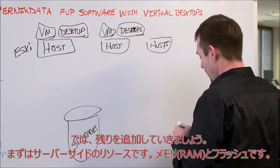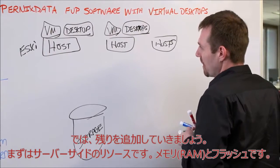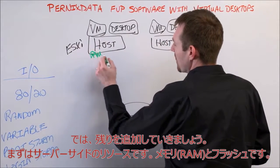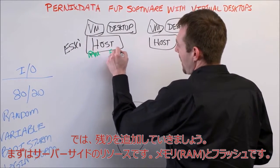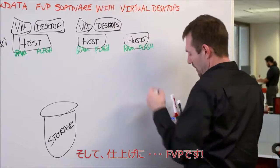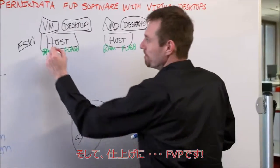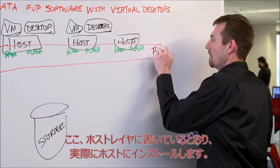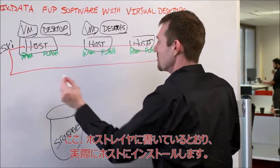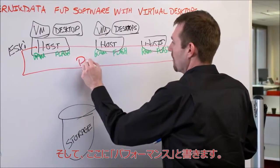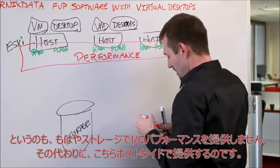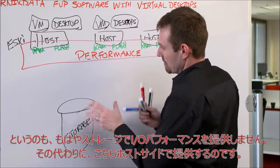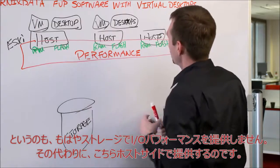Let's draw in the rest of our resources, starting with the server-side resources. In this case, let's talk about using RAM and Flash. And finally, let's draw in FVP. You'll notice I've drawn it at the host layer because it's actually installed in the host. No longer are we talking about having to provide I/O performance from the storage array — we're going to do it at the host side instead.